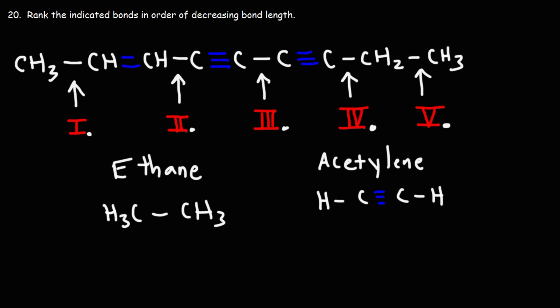But now let's include hybridization into the discussion. If we look at what type of orbitals are overlapping to form the single bond or the sigma bond, these are sp3 hybrid orbitals. Each carbon in ethane is sp3 hybridized. There's no pi bonds.